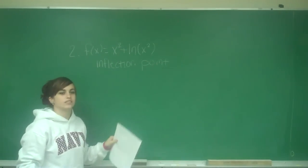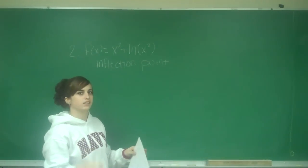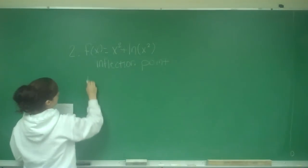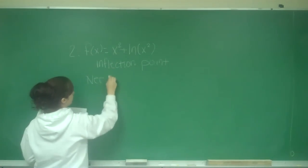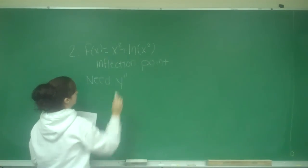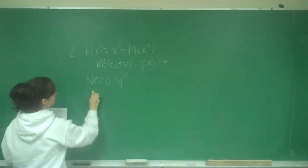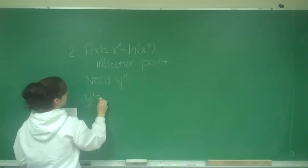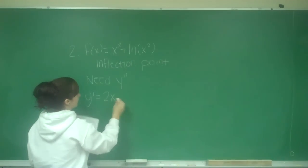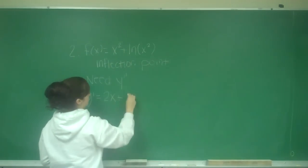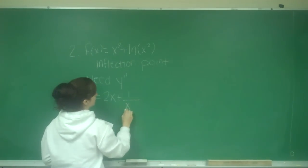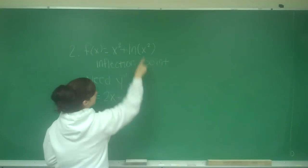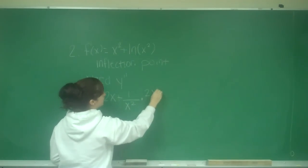When I find an inflection point, I have to find the second derivative, so we need y double prime. y prime would be the derivative of this, so that's 2x plus 1 over x squared times the derivative of the inside, which is 2x.